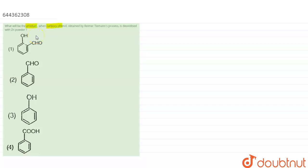What will be the product when carboxyphenol obtained by Reimer-Tiemann process is deoxidized with zinc powder? So carboxyphenol is nothing else but a benzene ring with OH and COOH groups. This is our carboxyphenol.